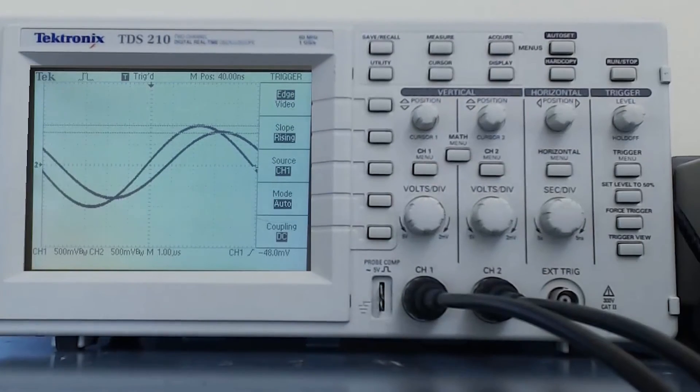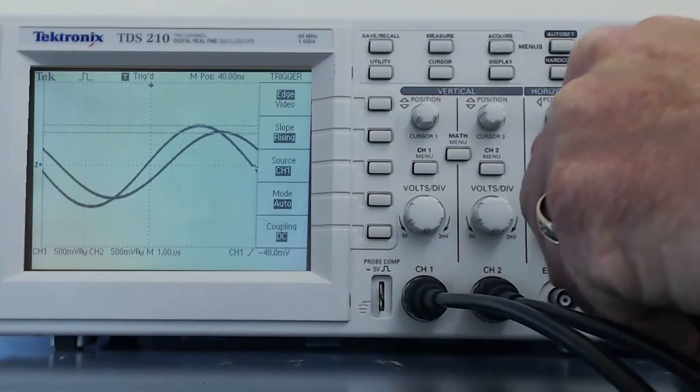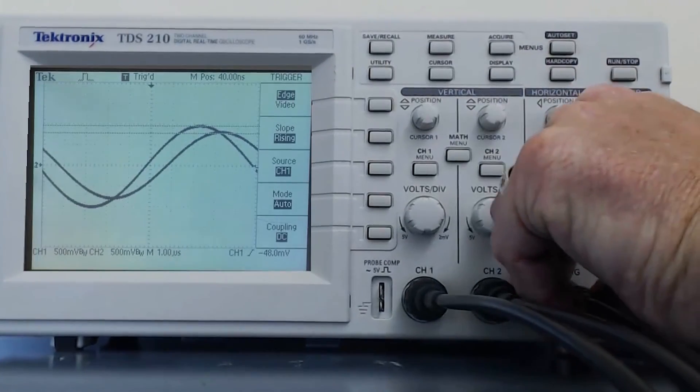If we are having trouble triggering a signal, very often just cycling through these options will correct our problem. If we are using a function generator to generate our signal, and we are having a lot of trouble getting our signals to trigger, we can use the sync output from the function generator with the external trigger option on the oscilloscope.